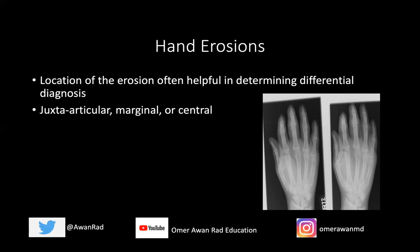I think also talking about the actual location of the erosion within the joint is very important — a topic that's not really discussed well in residency programs. So I want to take a moment to address that. When looking at the hand specifically, I'll give a differential diagnosis for three types: a juxta-articular erosion, a marginal erosion, and a central erosion.